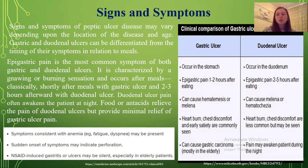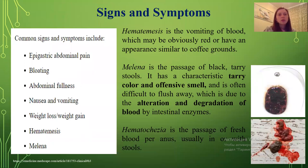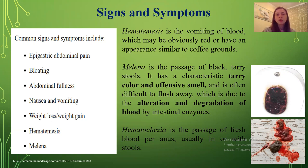A clinical comparison: gastric ulcer occurs in the stomach with epigastric pain 1–2 hours after eating and can cause gastric carcinoma. Duodenal ulcer occurs in the duodenum with epigastric pain 2–5 hours after eating and can cause melena or hematemesis. Heartburn and chest discomfort are less common but may be seen. Pain may awaken patients during the night. Common symptoms include epigastric abdominal pain, bloating, nausea, vomiting, weight loss, hematemesis, and melena. Hematemesis is vomiting of blood which may be obviously red or have an appearance similar to coffee grounds. Melena is the passage of black tarry stools with a characteristic tarry color and offensive smell, due to the alteration and degradation of blood by intestinal enzymes.